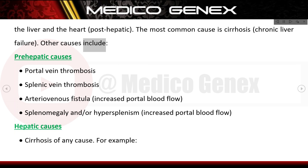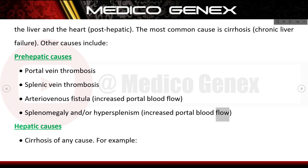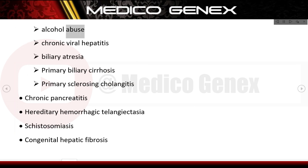Pre-hepatic causes include portal vein thrombosis, splenic vein thrombosis, arteriovenous fistula, increased portal blood flow, splenomegaly, and/or hypersplenism. Hepatic causes include cirrhosis of any cause — for example, alcohol abuse and chronic viral hepatitis.